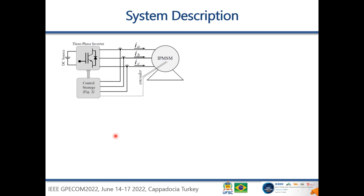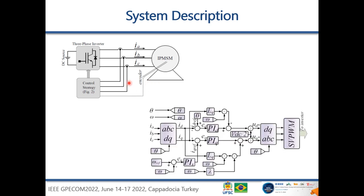For the system description, I have a figure showing the setup: a DC source, a three-phase inverter, and the machine. The phase currents are measured, and an encoder is used for the control strategy. The encoder could be replaced by an estimation algorithm for speed and position — for the control strategy presented in this paper, it doesn't matter whether the speed comes from an encoder or an estimation algorithm.